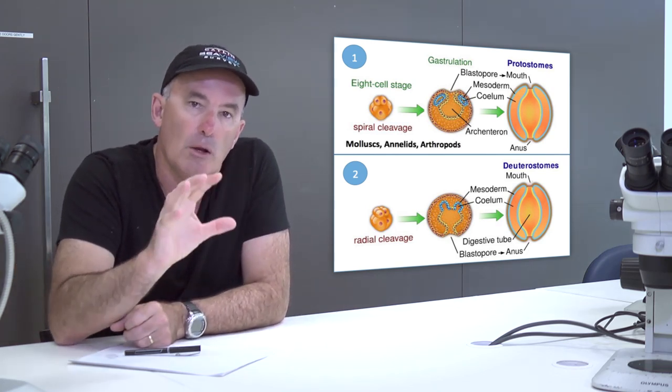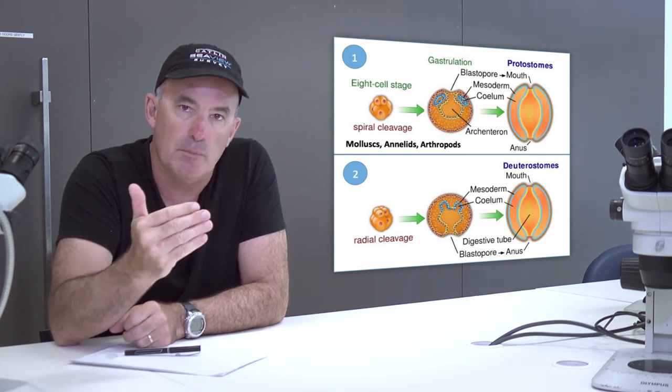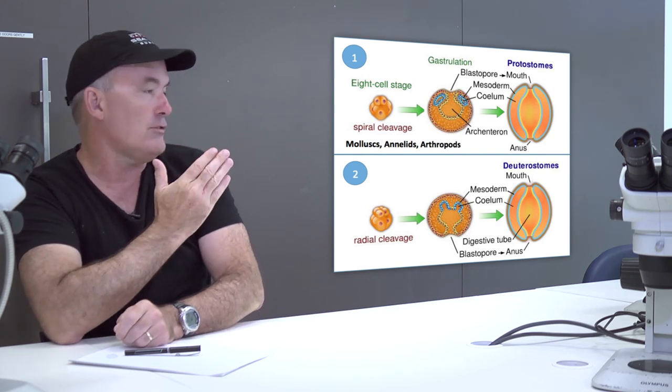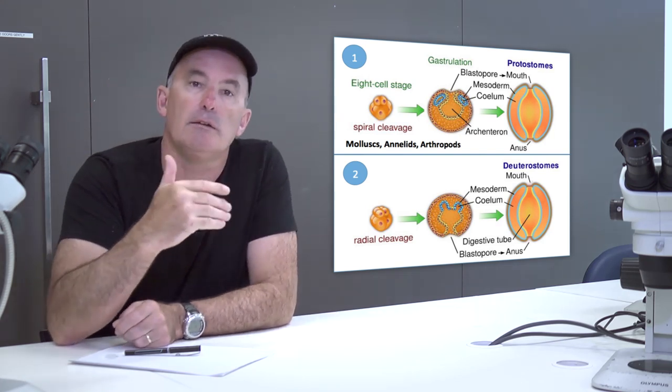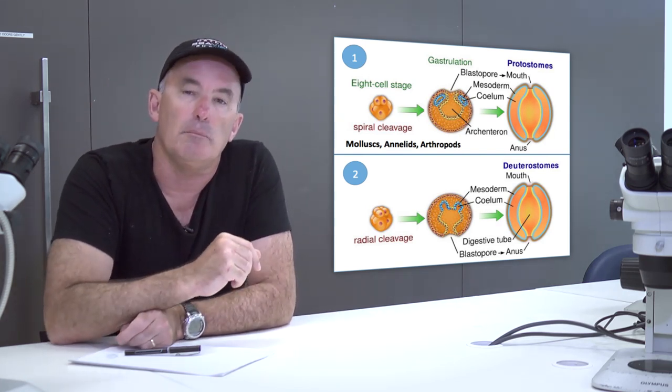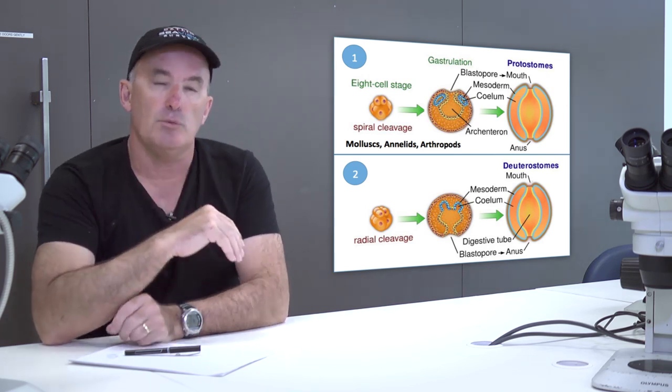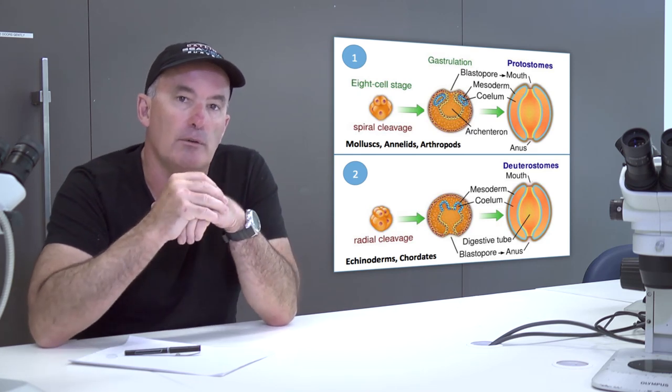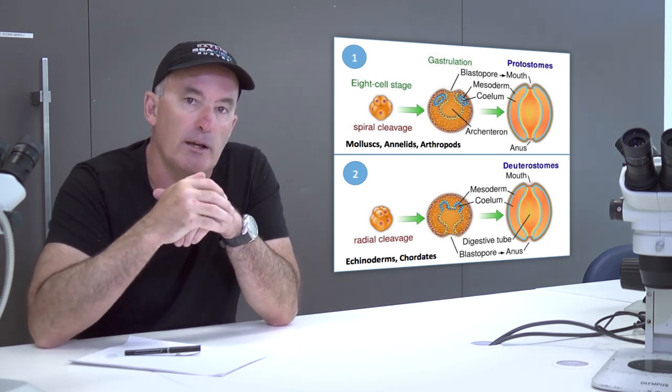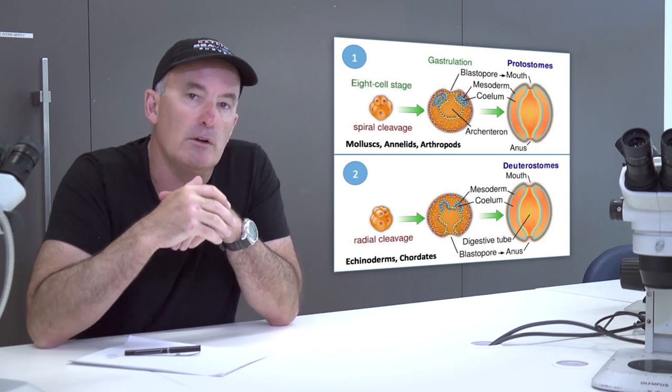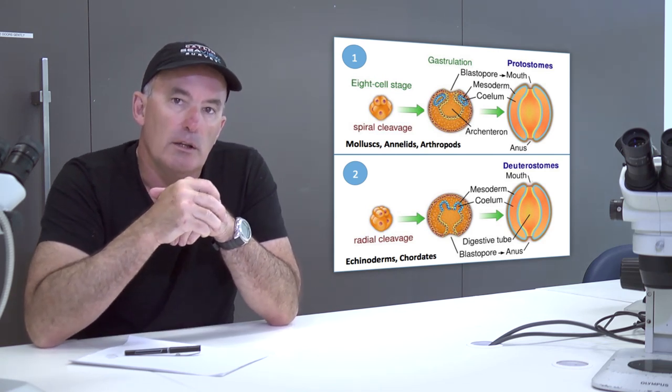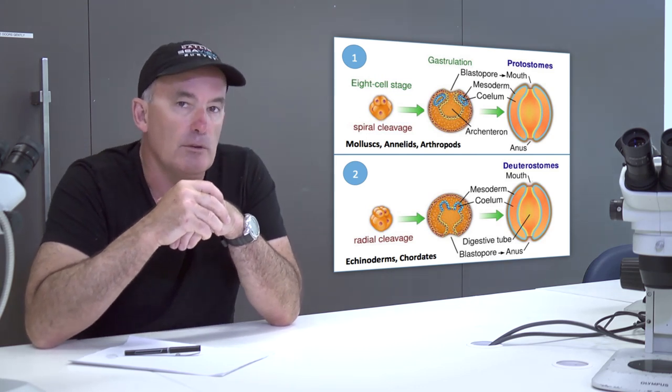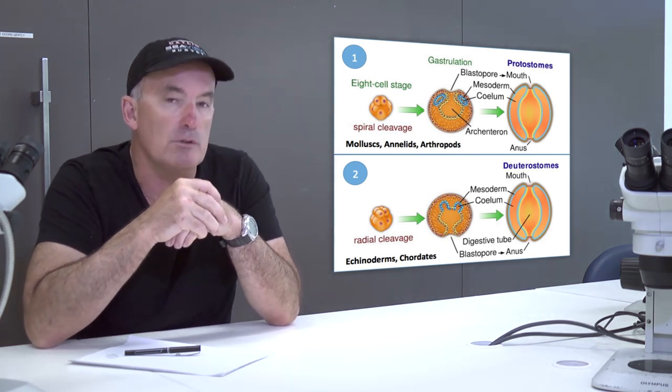On one hand we have mollusks, annelids, and arthropods which share similarities in the way they develop and in the origin of certain tissues and other aspects of their body plan. In contrast to this we have echinoderms and chordates like ourselves which develop in subtly different ways and have different origins in terms of key tissues. The first group are known as the protostomes while the second group are referred to as the deuterostomes.